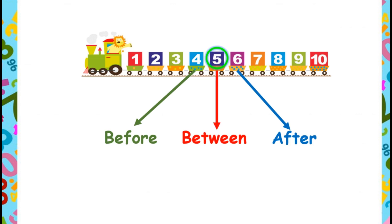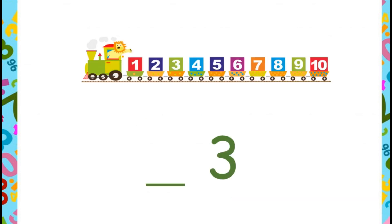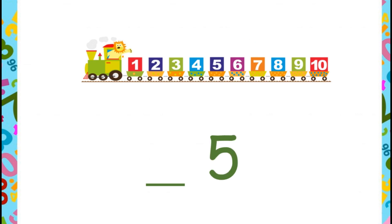Let's find the before numbers. Before number of 3 is 2, as 2 comes first. Before number of 7 is 6, as 6 comes first. What is the before number of 5? Before number of 5 is 4, as 4 comes first.